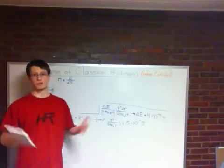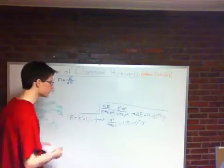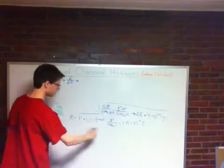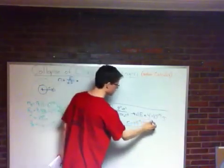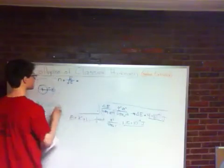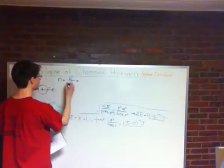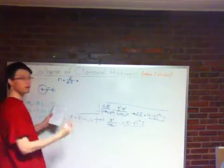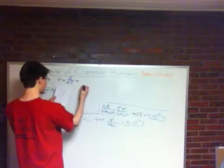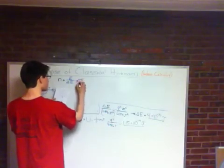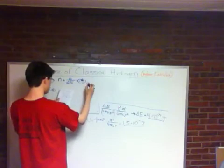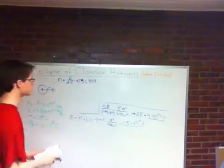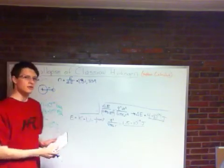So E over delta E. We found E here, we found delta E, the change in energy, here. And that's going to give us that the number of orbits the electron will take before stopping and running out of energy is going to be 281,859. So it's a lot of orbits.